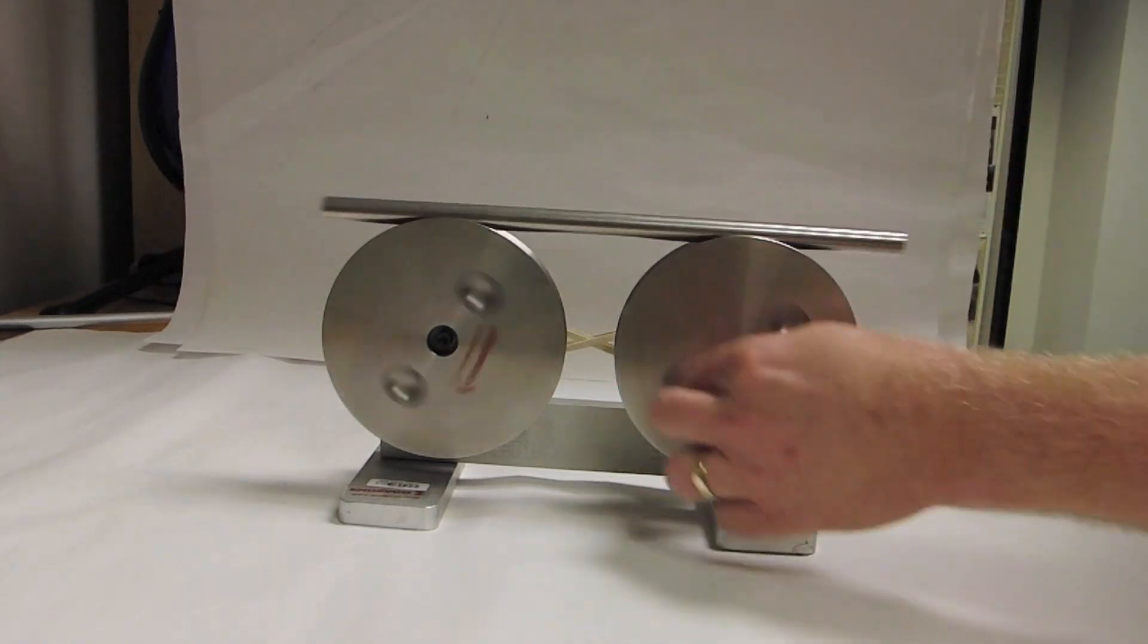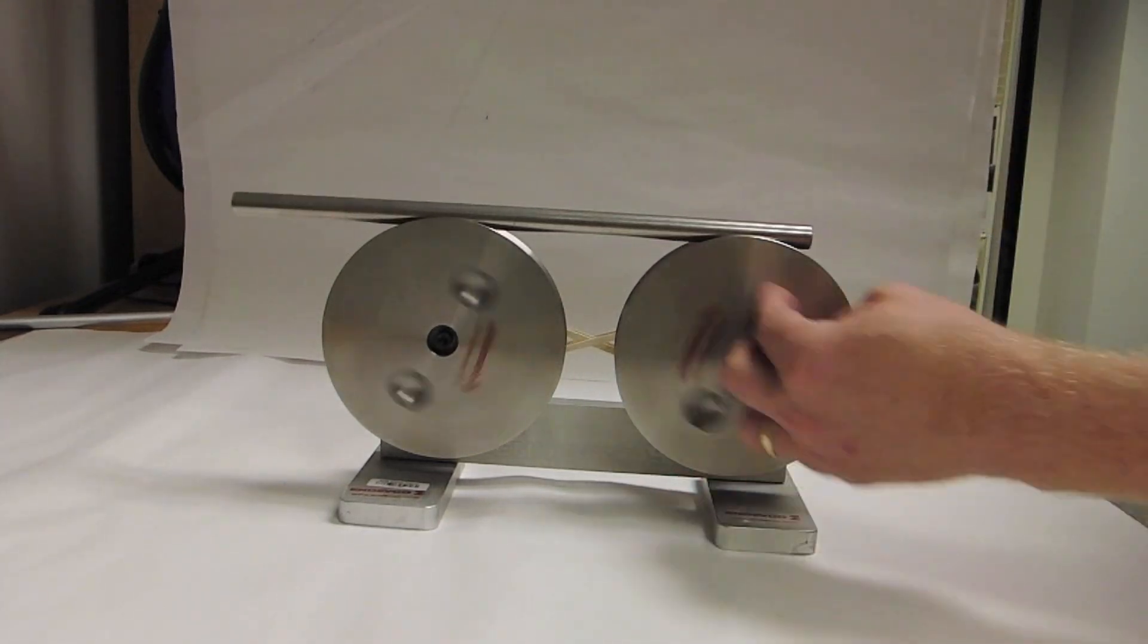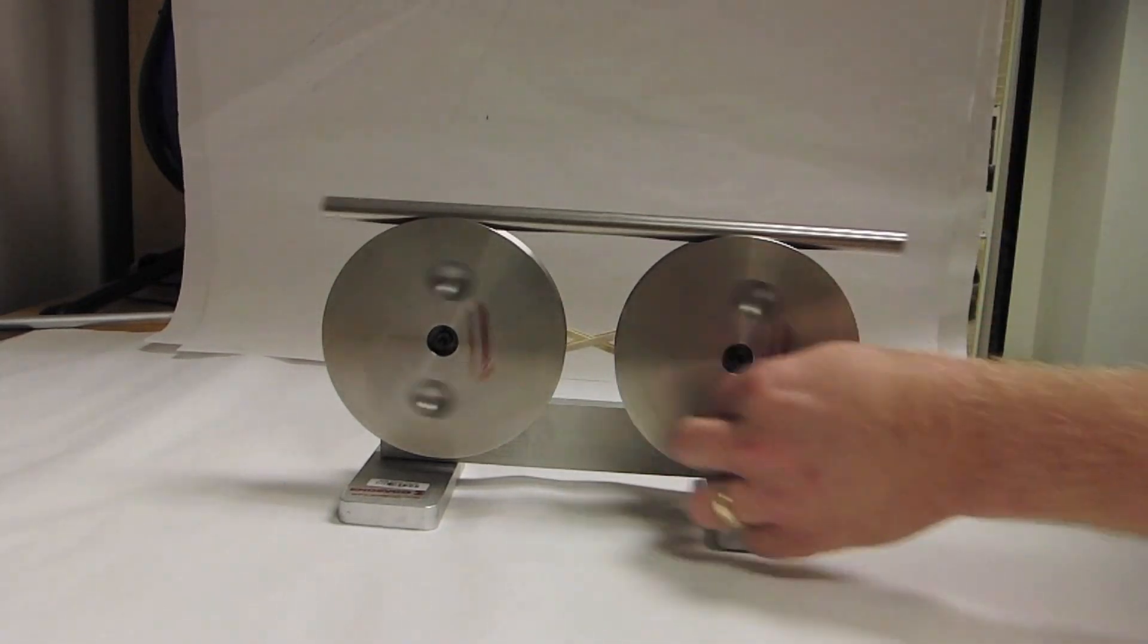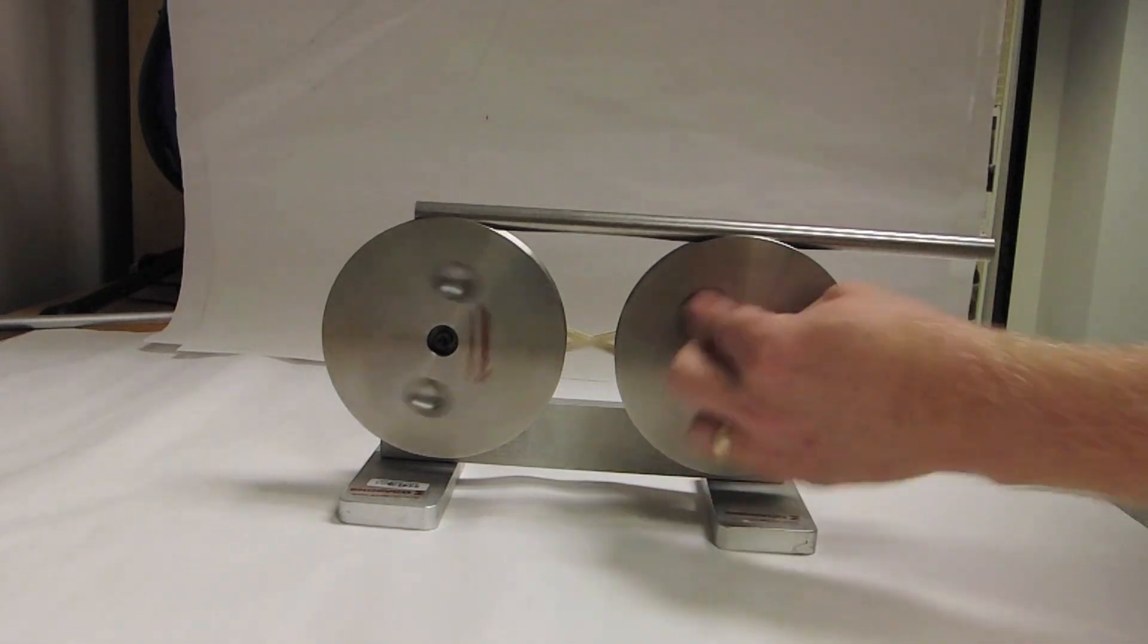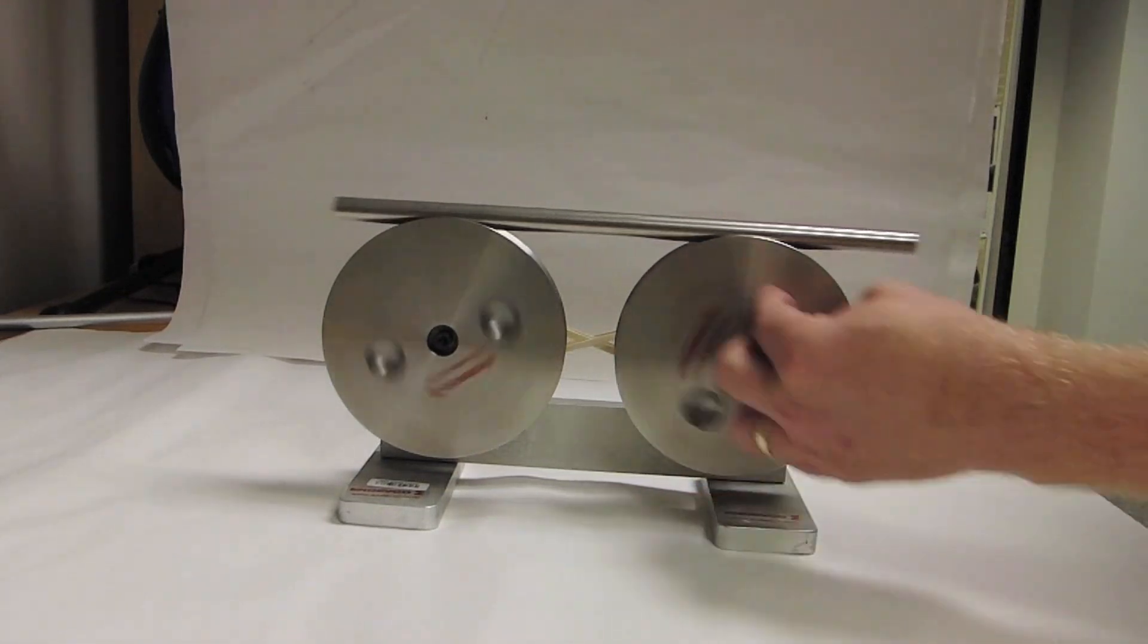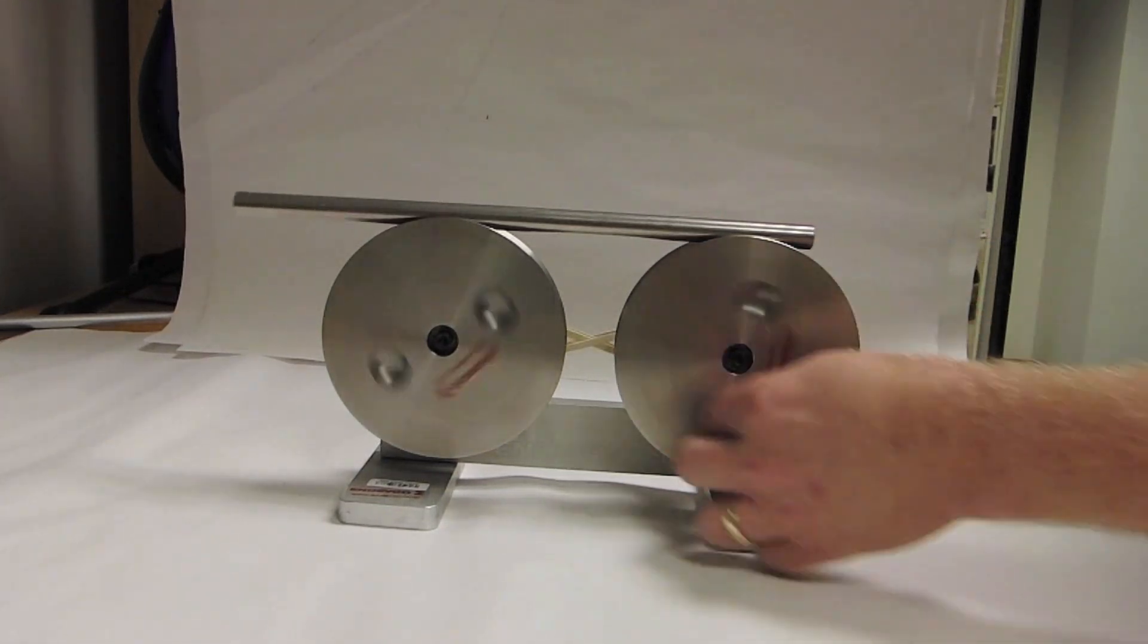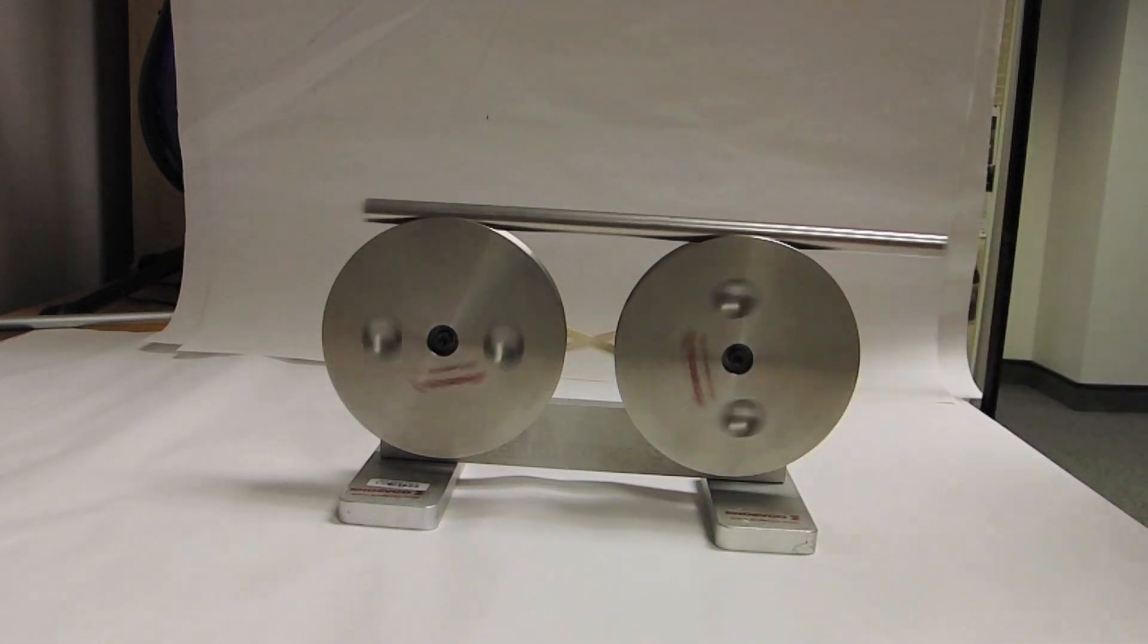When the system is displaced from equilibrium, the net friction restoring force pushes the system back toward equilibrium. The inertia of the rod causes it to overshoot equilibrium. And the trade-off between restoring force and inertia causes the system to oscillate.